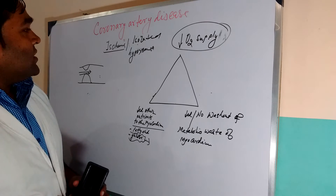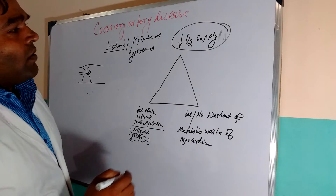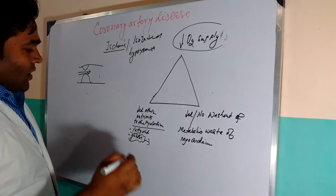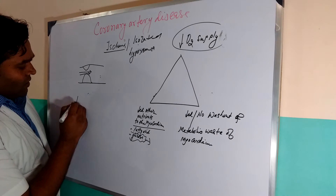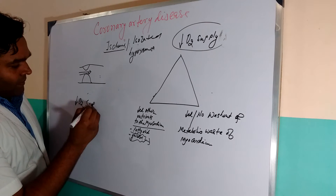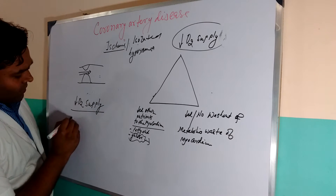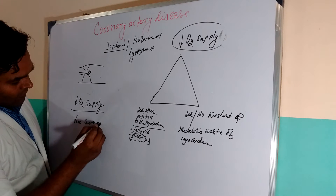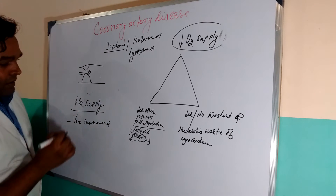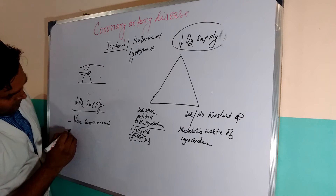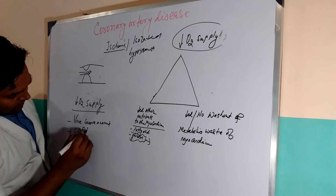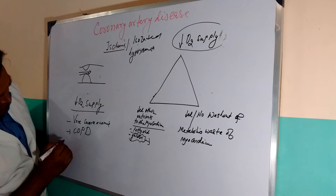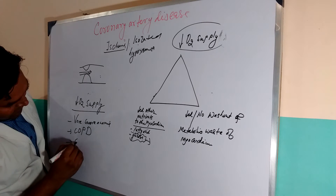The conditions which only cause decreased oxygen supply to the heart — that is, isolated hypoxemia — include very severe anemia, COPD (chronic obstructive pulmonary disease), and congenital heart disease.